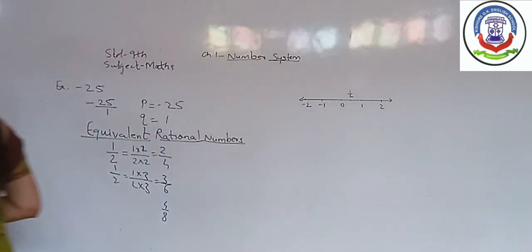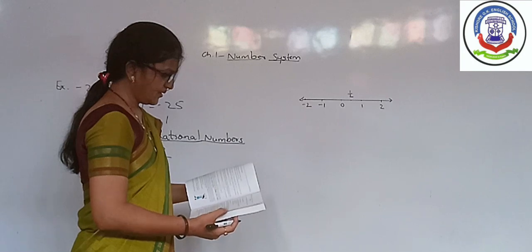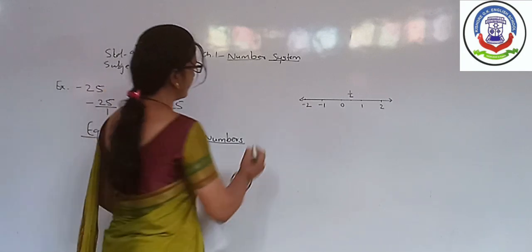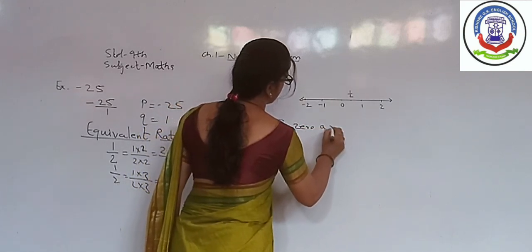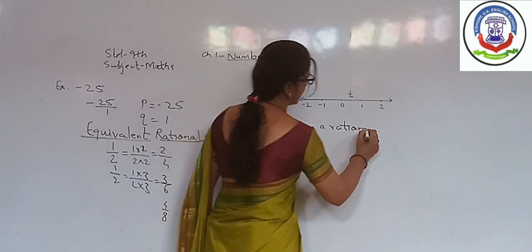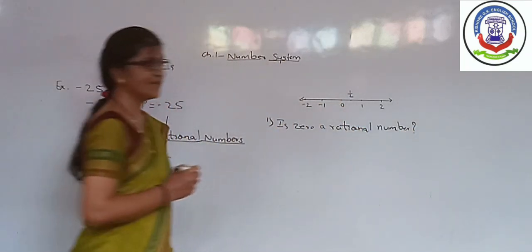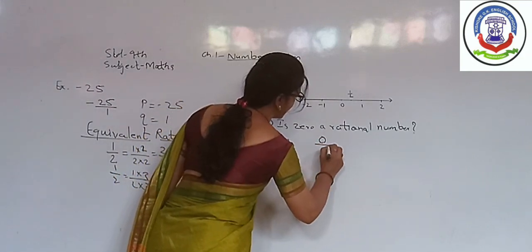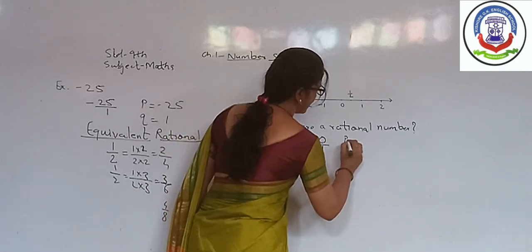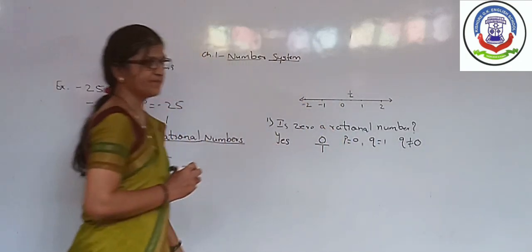Now, we will discuss a question from the textbook. First is: Is 0 a rational number? Can you guess whether 0 is a rational number or not? Yes, 0 is a rational number. Why? Because we can represent it in the form 0 by 1, where P is equal to 0, Q is equal to 1, as well as Q not equal to 0.